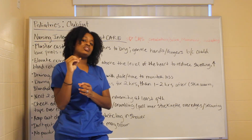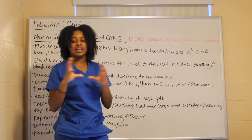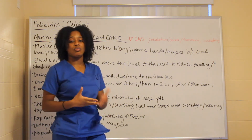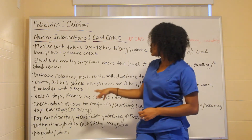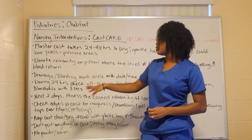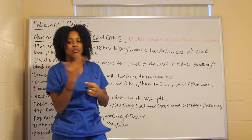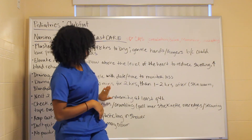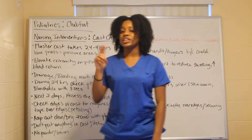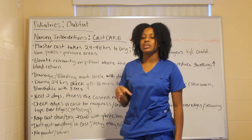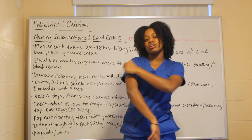If you mark at one time and it grows significantly within 30 minutes, that gives you a scale to monitor blood loss rate. In the first 24 hours, check every 15 to 30 minutes for two hours, then every one to two hours for the remainder of the 24 hours. For the next two days, check every four hours.